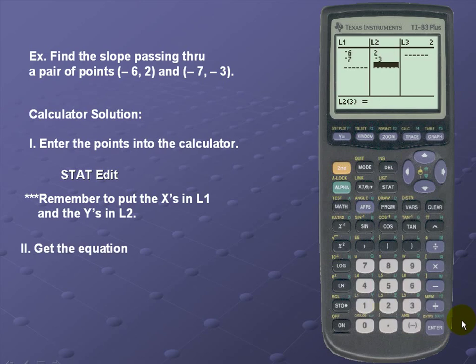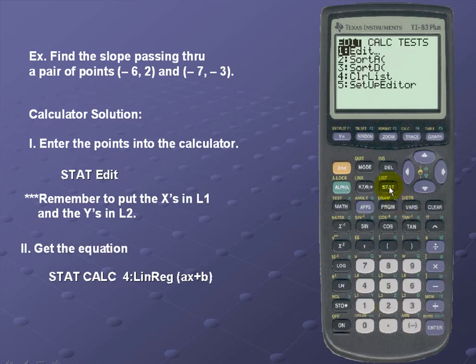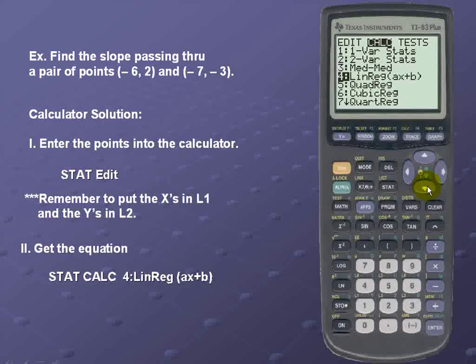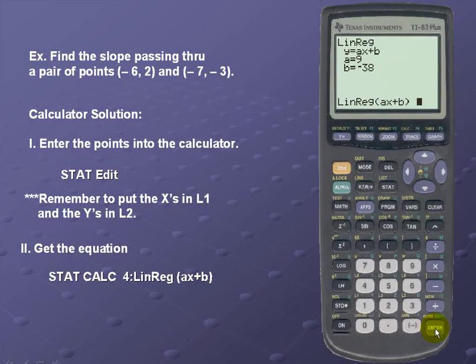Next we'll get the equation. So we'll re-enter the STAT menu. We'll scroll over to Calculate. We'll scroll down to the fourth option, linear regression ax+b. We'll hit enter once and we'll hit enter again.